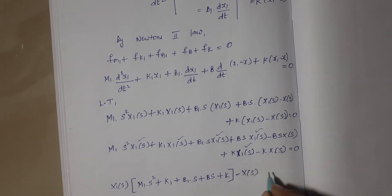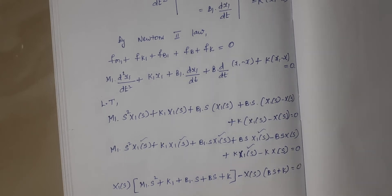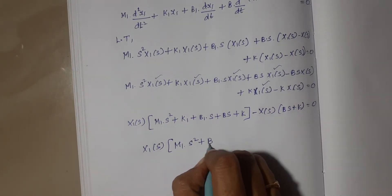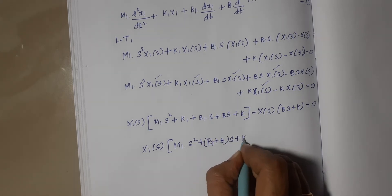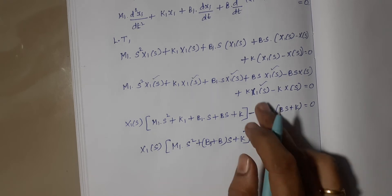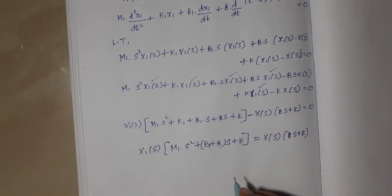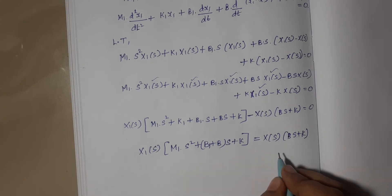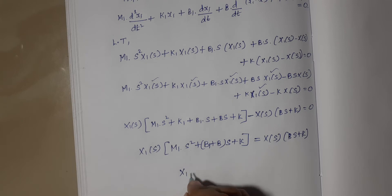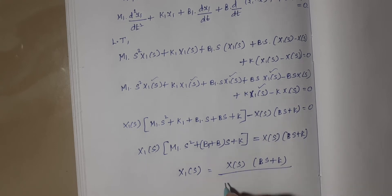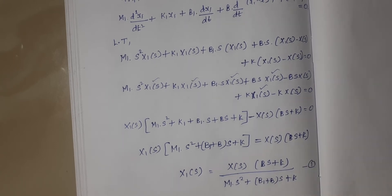Taking −X(s) outside gives the remaining terms (bs + k), and the equation equals 0. Rearranging: X1(s)·[m1s² + (b1 + b)s + k1 + k] = X(s)·(bs + k). Therefore, X1(s) = X(s)·(bs + k) / [m1s² + (b1 + b)s + k1 + k]. Let this be Equation 1.